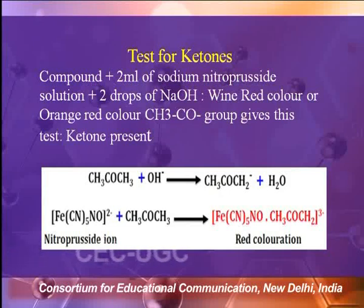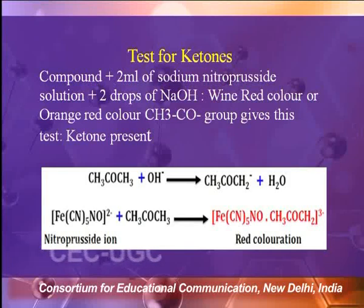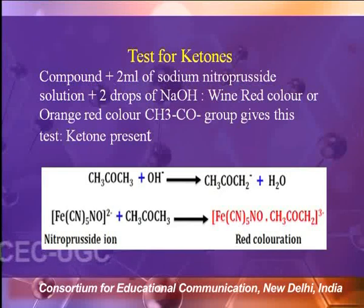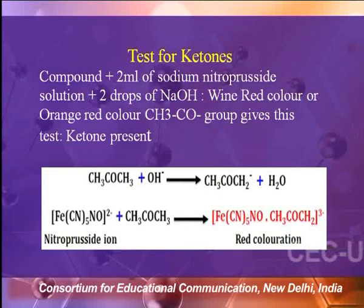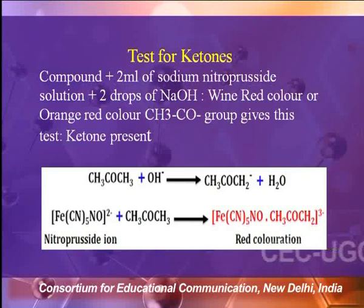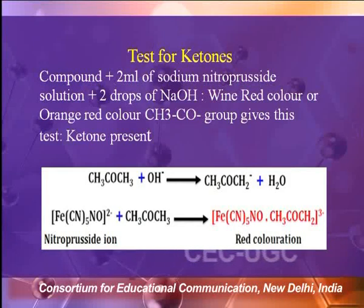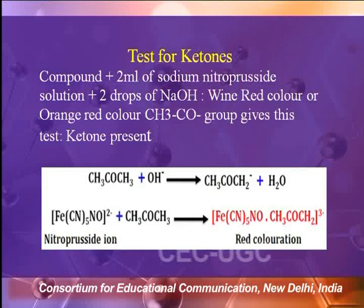We have learned many tests for the carbonyl functional group. To summarize: first check the possibility of a carbonyl group with the 2,4-DNP test. If positive, distinguish whether it is an aldehyde or ketone using the Tollens, Fehling, Schiff, or Benedict test. If any of these come out positive, the carbonyl group is an aldehyde, and ketonic functional group is automatically absent. For specific detection of methyl ketones, use the sodium nitroprusside test.